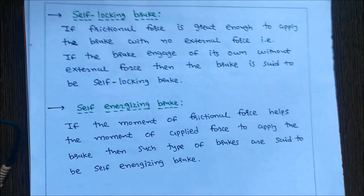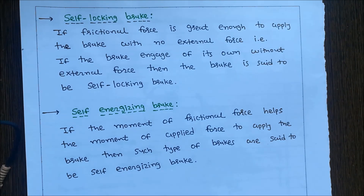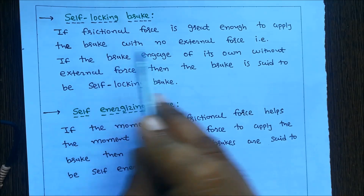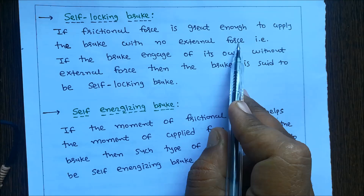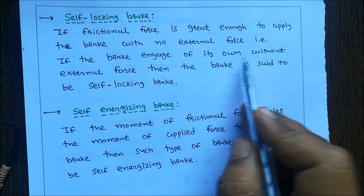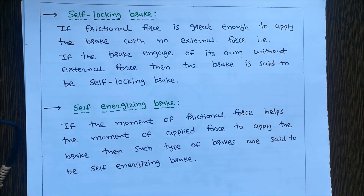What is the meaning of self-locking brake? If frictional force is great enough to apply the brake with no external force — meaning if the brake engages on its own without external force — then the brake is said to be a self-locking brake. In a self-locking brake, frictional force is great enough to apply the brake and we do not require any kind of external force.